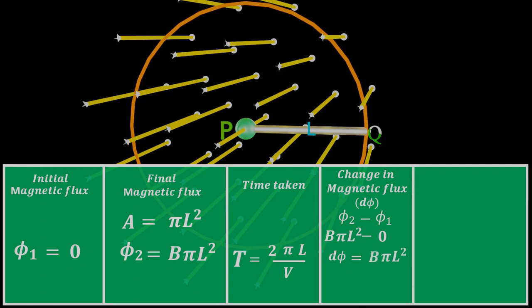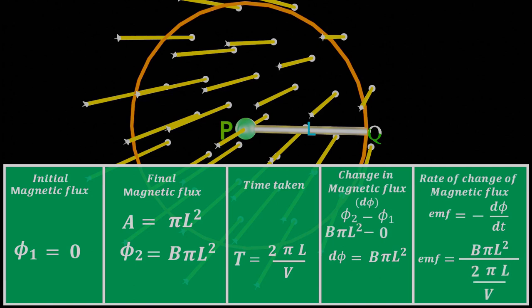Now, as we know that, according to Faraday's second law of electromagnetic induction, the rate of change of magnetic flux, dφ/dt is equal to the magnitude of EMF induced. By putting the value of change in magnetic flux, dφ, which is BπL² divided by the time that is 2πL over velocity V. Therefore, after simplifying the equation, we got ½BLV.